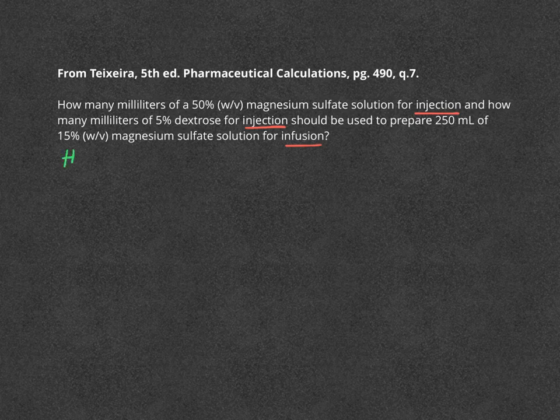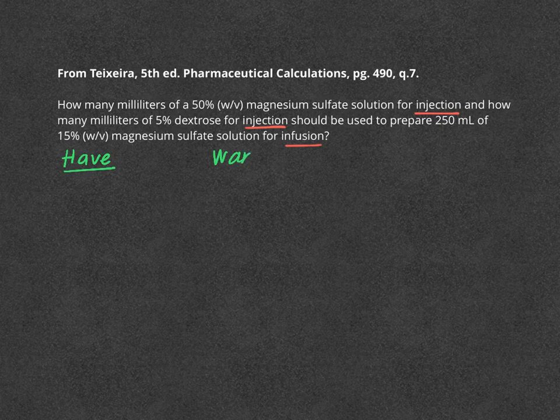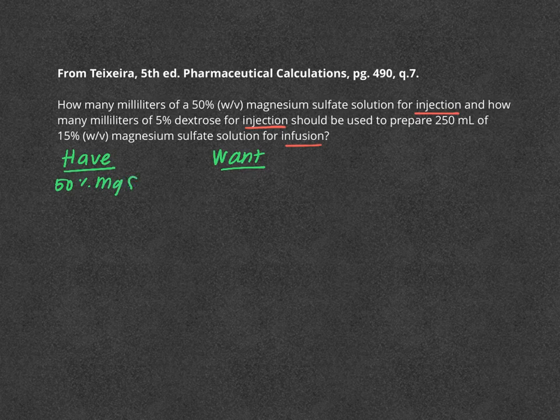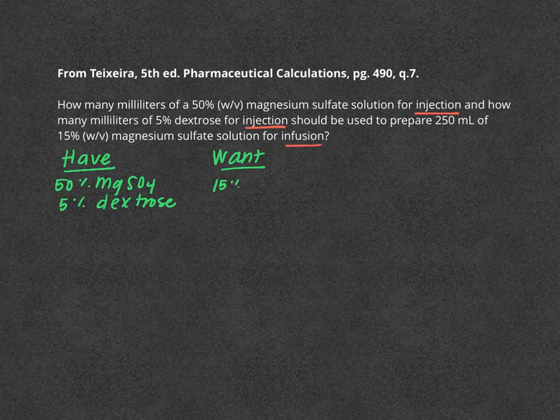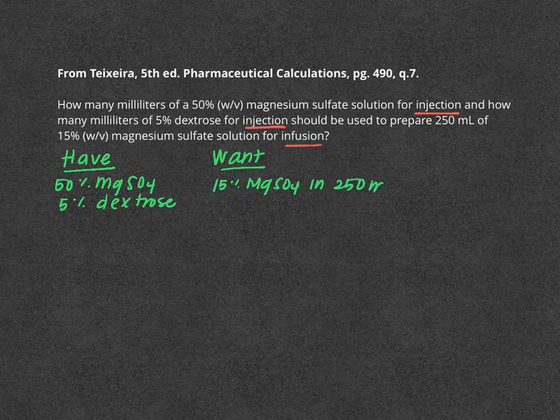So what we know are our haves and our wants. We have 50% magnesium sulfate solution, and we have 5% dextrose solution. And of these, we want to make a 15% magnesium sulfate in a quantity of 250 ml.